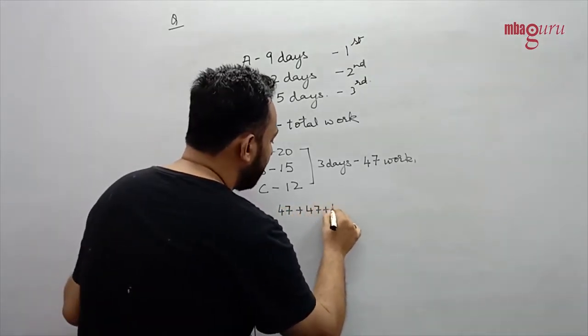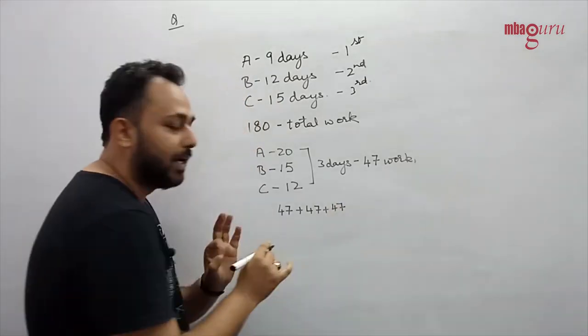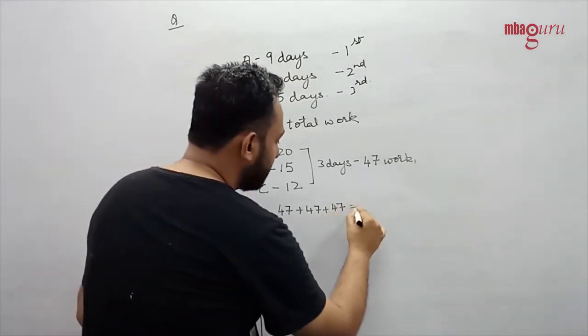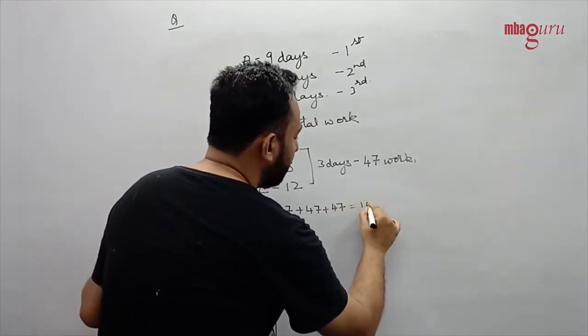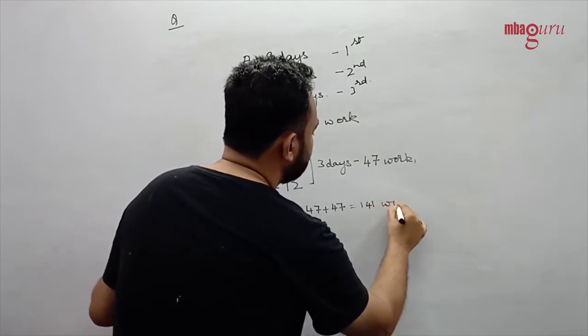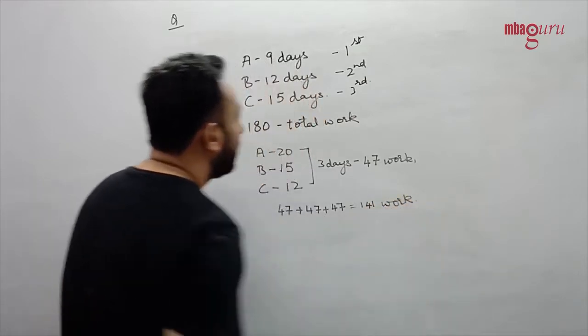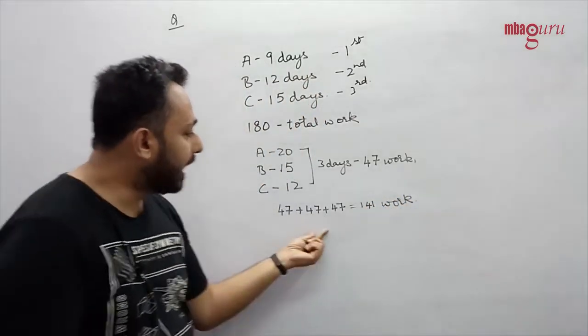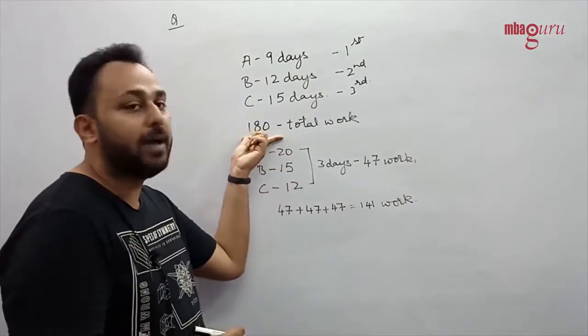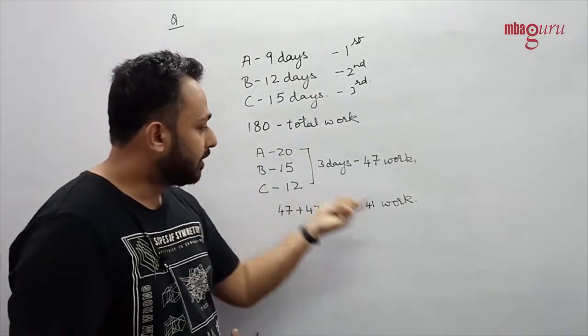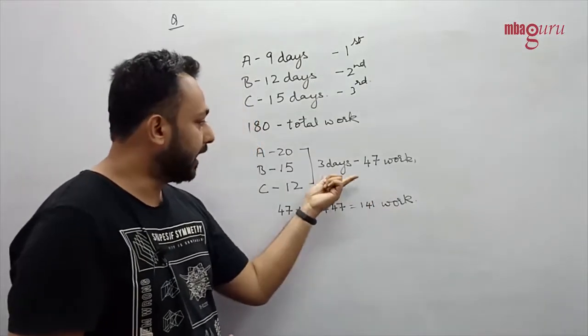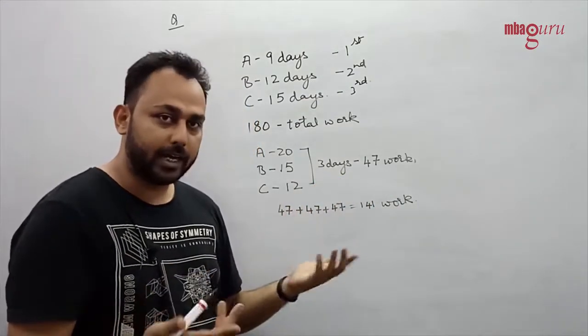47, 47, 47, 47. Three complete cycles have been used up and so far we have managed to do 141 work. After this, if I add another 47, I will reach the value of 180 and we don't have to go that far. So 141 work has been done in 3 cycles of 3 days or in 9 days.